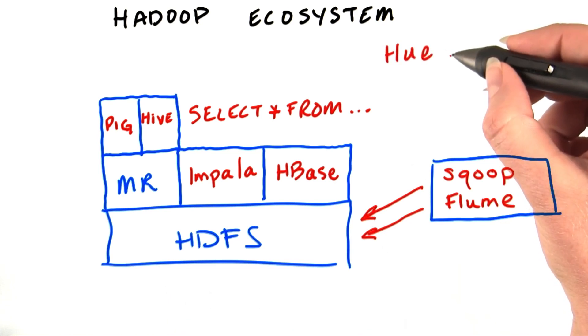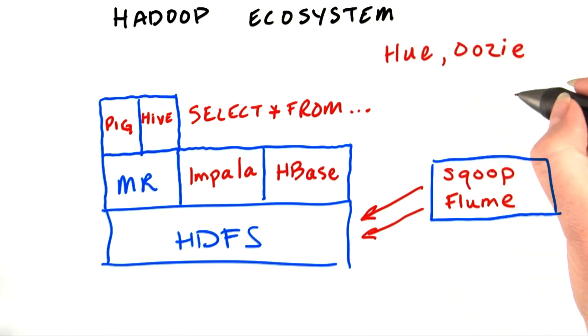Hue is a graphical front end to the cluster. Oozie is a workflow management tool. Mahout is a machine learning library. In fact, there are so many ecosystem projects that making them all talk to one another and work well can be tricky.